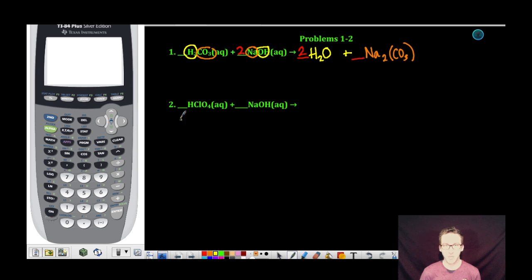As I take a look at problem number two, I'm now reacting HClO4 or perchloric acid with sodium hydroxide. Again, I always like to start by making the water molecule, taking the H from my acid, the OH from my base to form H2O.